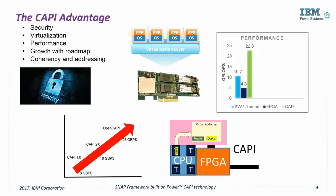The transparent and open Power roadmap has clear leadership in bandwidth and latency for attaching all types of devices. Power9 and CAPI are market leaders with PCIe Gen 4, followed quickly with OpenCAPI. The transparent roadmap allows partners to plan ahead and get immediate benefits from the leading-edge technology.